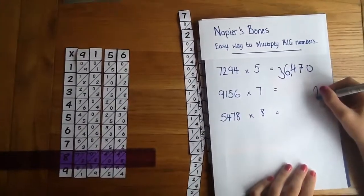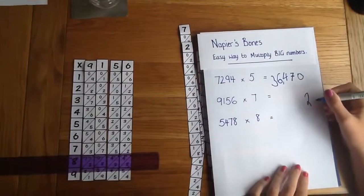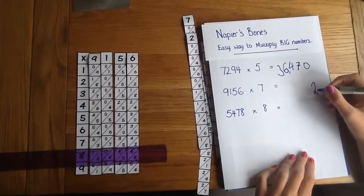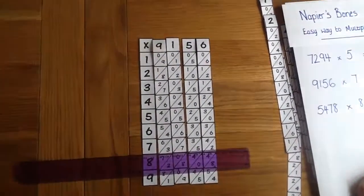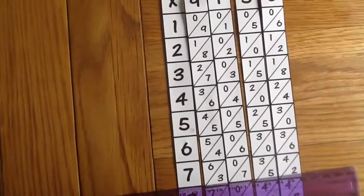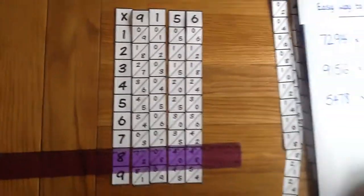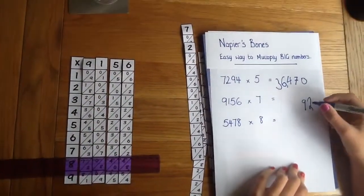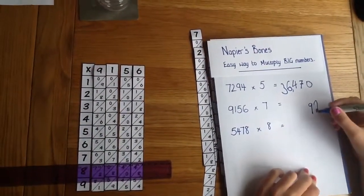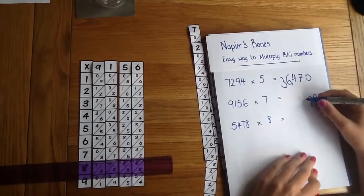Okay our answer will start or end with a 2. Then we're going to add the 5 and the 4 diagonally. Across this way here diagonally. 5 and 4 make 9. She's already got that one.